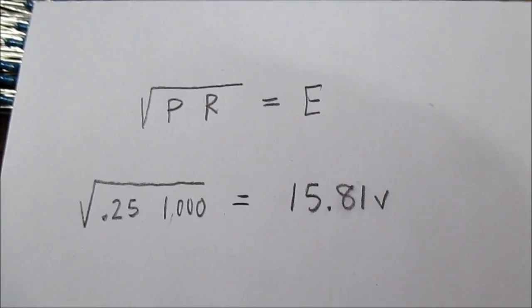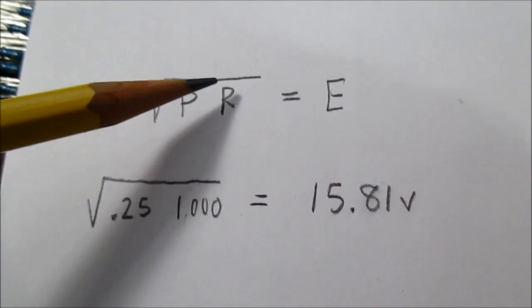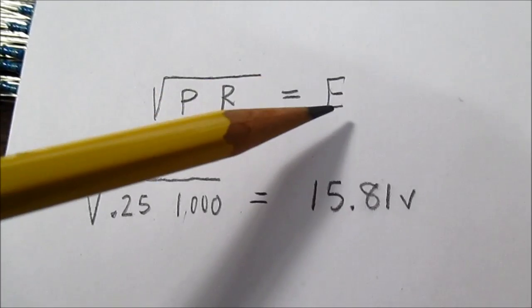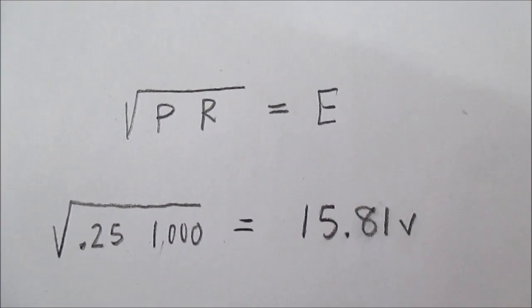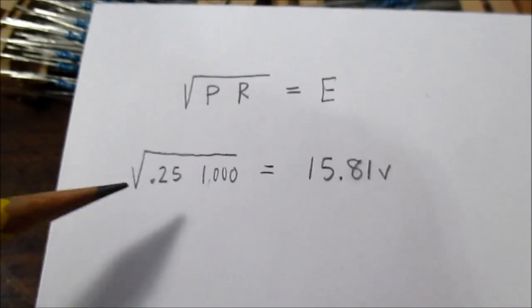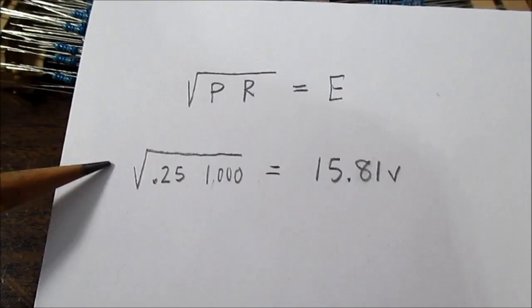I'll just use this formula here. It's the square root of power times resistance equals voltage. I'm just using E the old classic form. Electromotive force. So 0.25 times a thousand takes the square root.